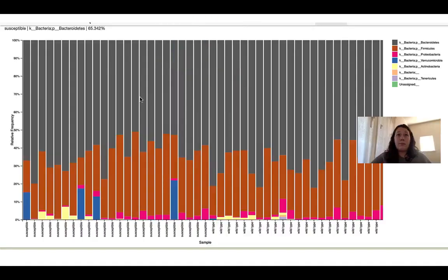We then looked at bar charts at the phylum level between donors and genotypes. This is the genotype view, and we were not able to see any differentiation from these bar charts.